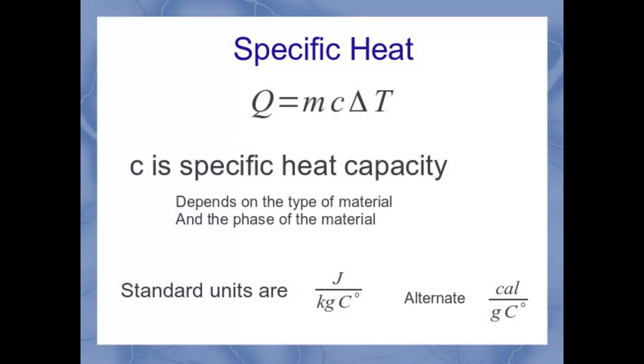And that leaves us with c. c is the specific heat capacity, and this is a property of materials which depends on what type of material you have. It also depends on what the phase of the material is. The standard units are joules per kilogram Celsius degree, although you'll also see calories per gram Celsius degree in some tables.